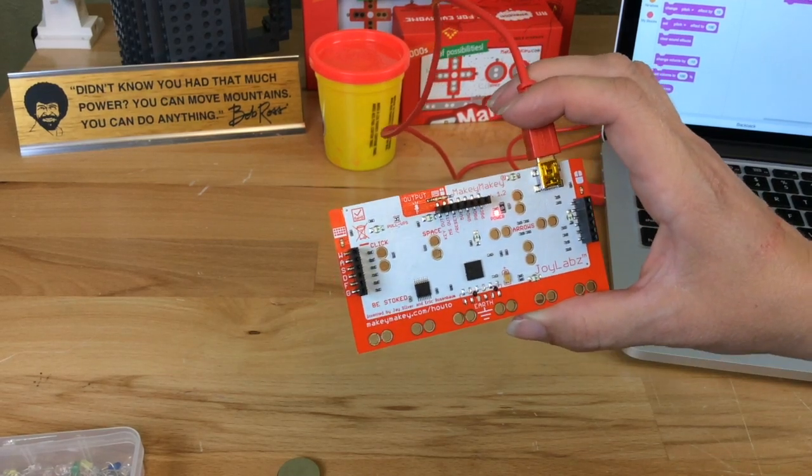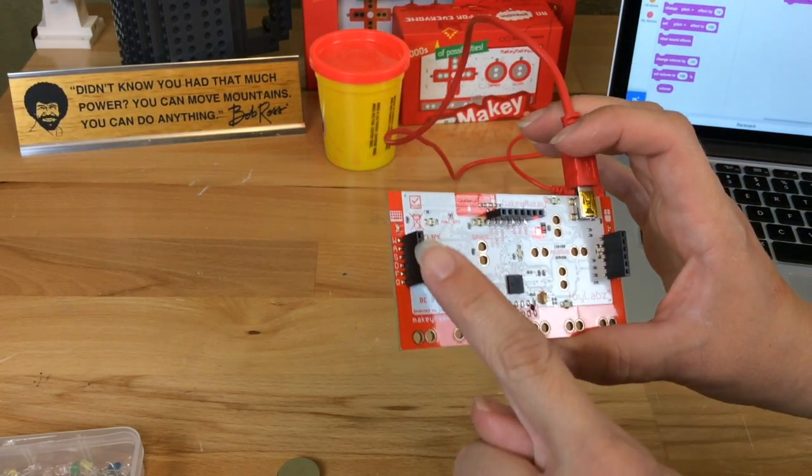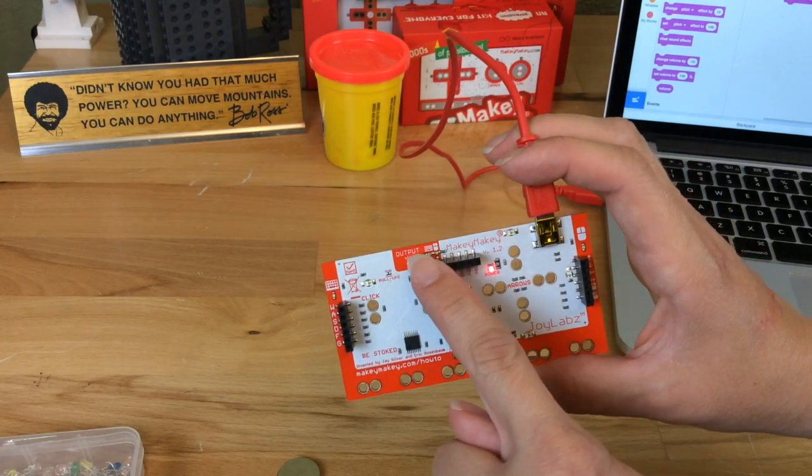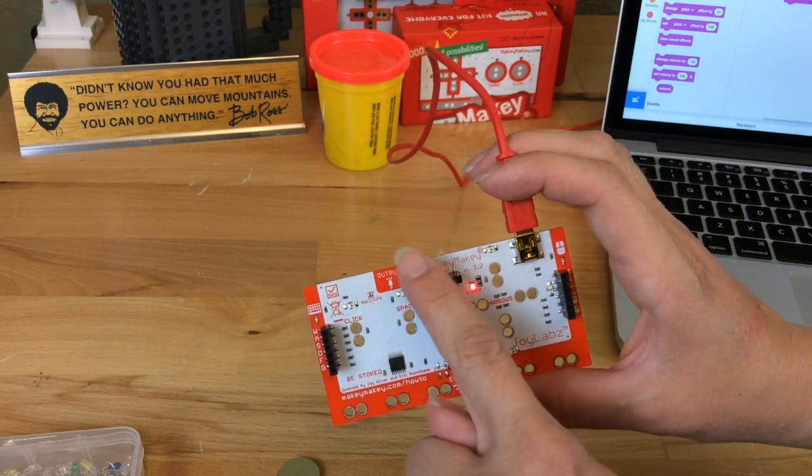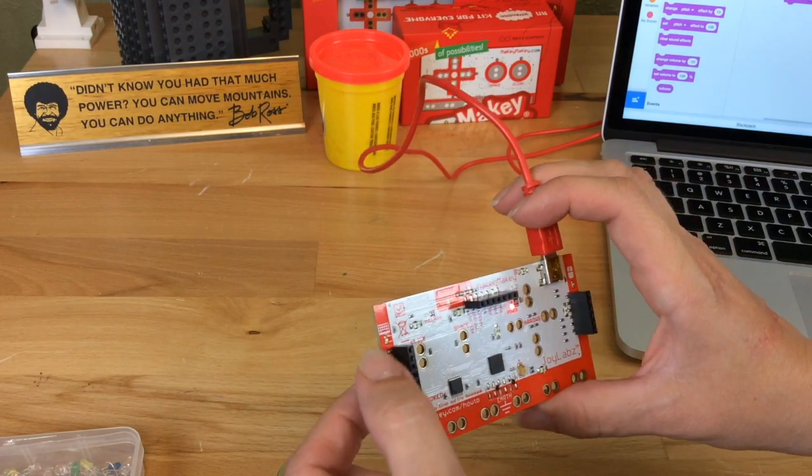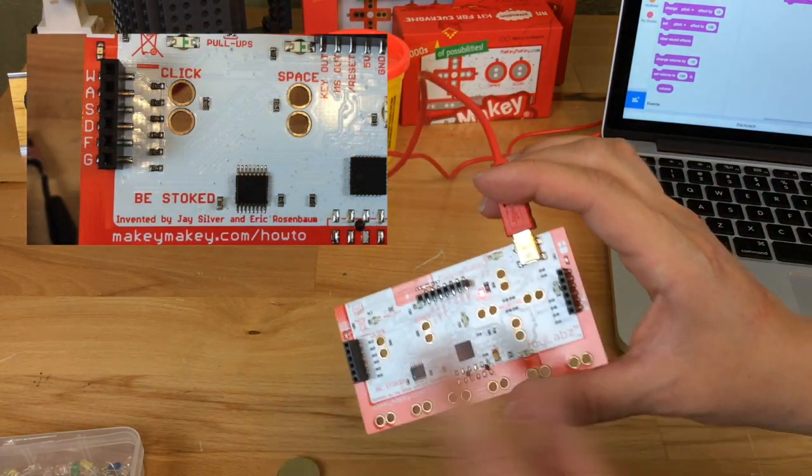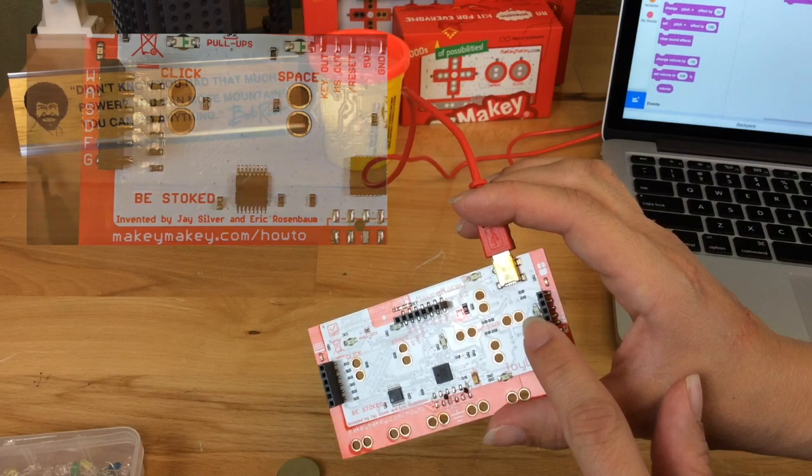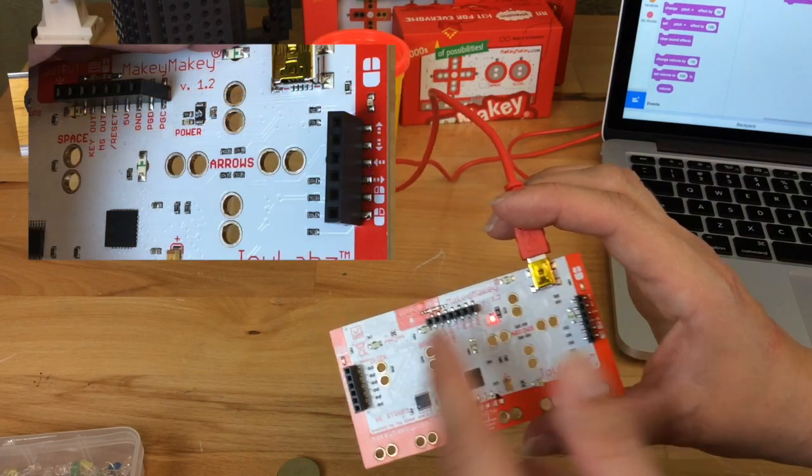Howdy folks, this is just a quick tutorial to the back of your Makey Makey board. On the back you have these headers, and these headers are similar to what you might find in Arduino boards. There is control of WASDFG, and on the right side you can control the inputs for your mouse.